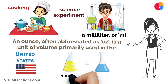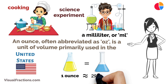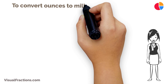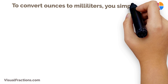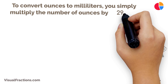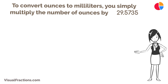Now, the conversion factor. One ounce is approximately equal to 29.5735 milliliters. To convert ounces to milliliters, you simply multiply the number of ounces by 29.5735.